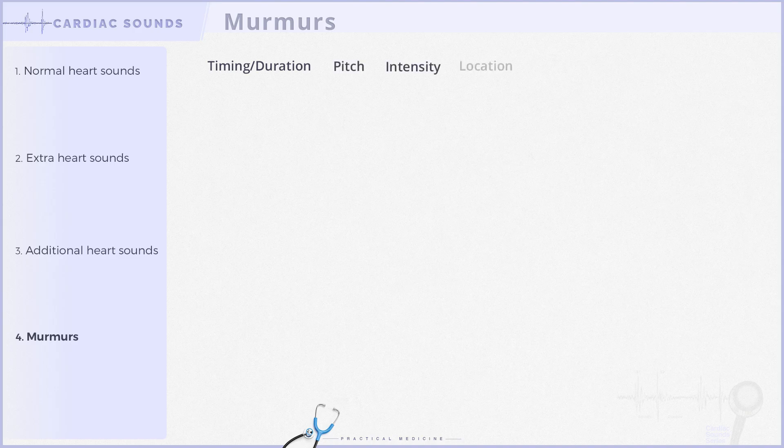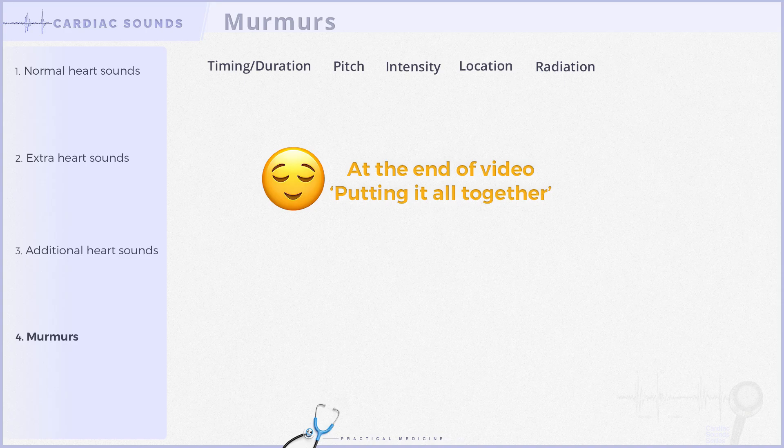We will examine the following characteristics to facilitate a comprehensive understanding of murmurs: their timing and duration within a cardiac cycle, pitch, intensity, location, and the presence or absence of radiation. When evaluating a murmur in clinical practice, we focus on all these characteristics. By the end of this video, we'll show you an example combining all these features in describing a murmur comprehensively, so make sure to stick around.